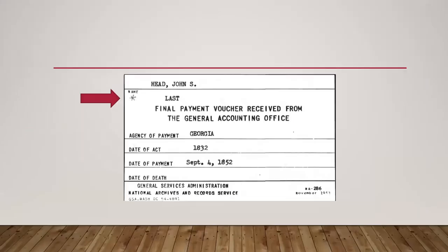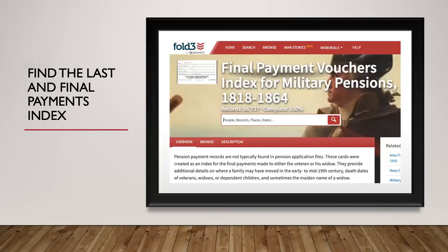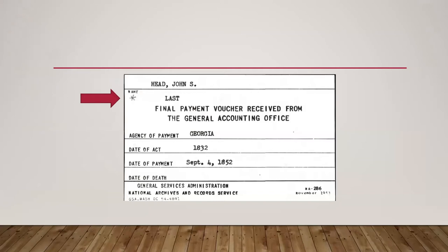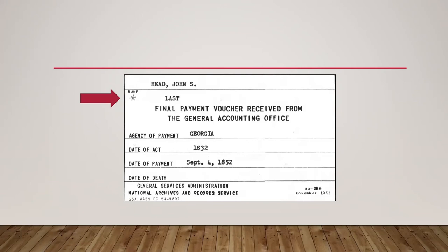You also want to find the original muster rolls — these are on Fold3. If there is a compiled military service record, there should be a muster roll on Fold3. Here is William Aaron on a muster payroll for his time in the 10th Virginia Regiment. The next thing I'm going to look for is the last and final payment indexes, also on Fold3. Here we see John S. Head has a last payment — not a final payment, but a last payment — in Georgia under the Act of 1832, and that payment was dated September 1852. There's an asterisk there, which tells me we'll be able to find that last payment in the National Archives.